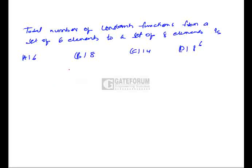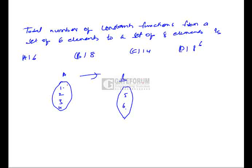Let us take an example. If set A contains elements 1, 2, 3, 4 and set B contains elements 5, 6, then if A to B is a constant function, all elements of set A should be associated with only a single element of set B. So all of 1, 2, 3, 4 should map either to 5 or to 6. So this is a constant function.